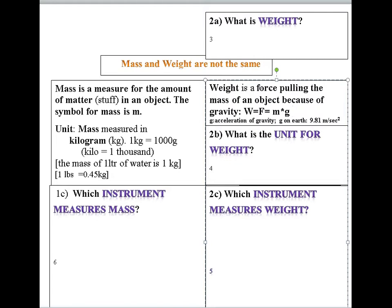And the weight is equal to the mass of the object multiplied by the acceleration of gravity g. G on earth is 9.8 meters per second squared.